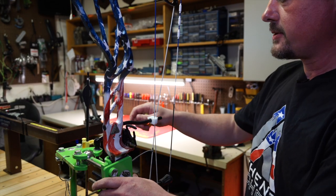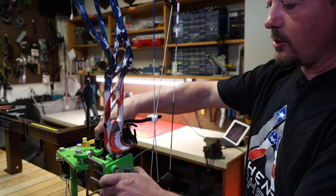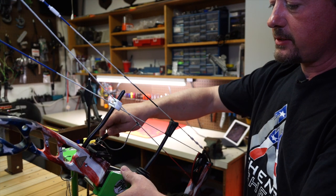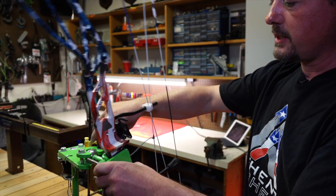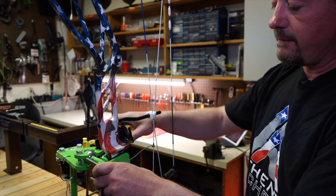First of all, I really like these Baker Archery vices. They allow you to rotate the bow 360 degrees in any direction and hold it precisely, but any kind of vise will work.